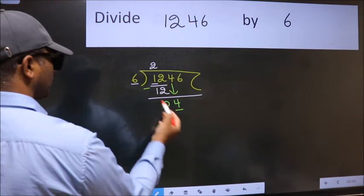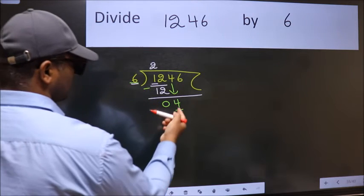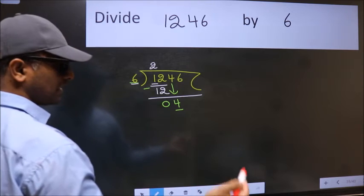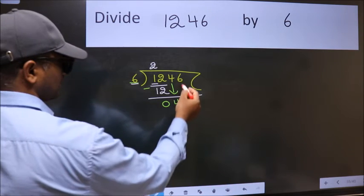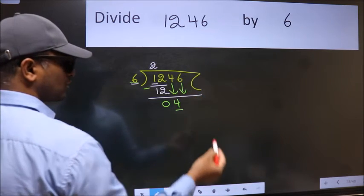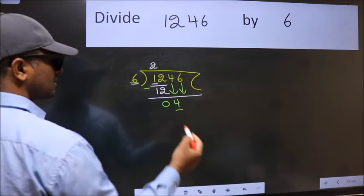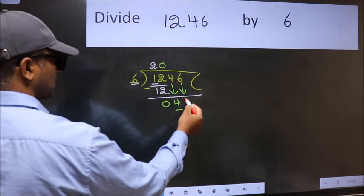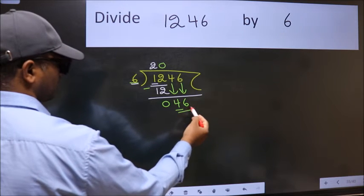Now here we have 4 and here 6. 4 is smaller than 6. So we should bring down the second number. And the rule to bring down the second number is put 0 here. Then only we can bring this number down. So 46.